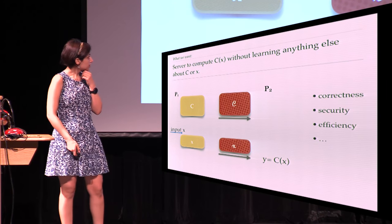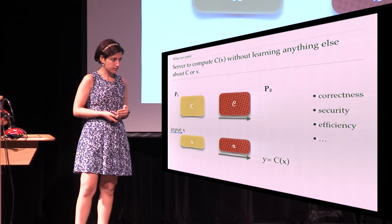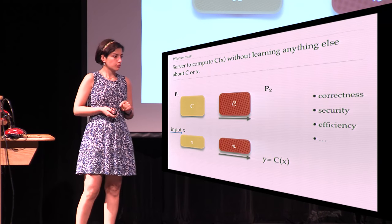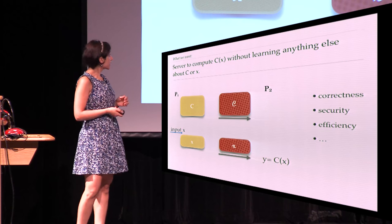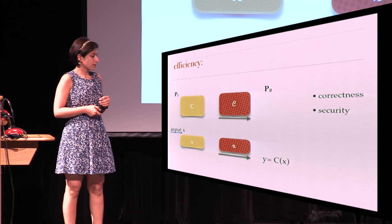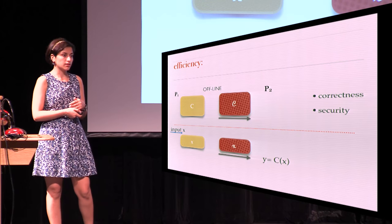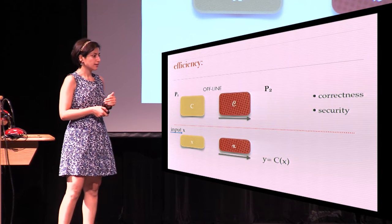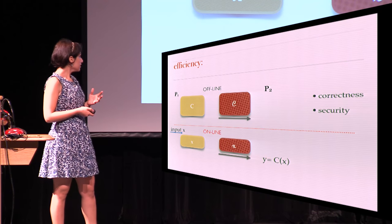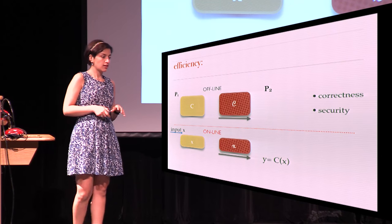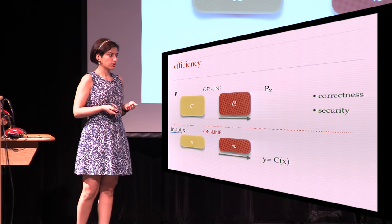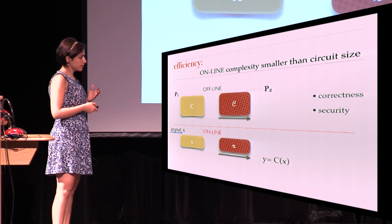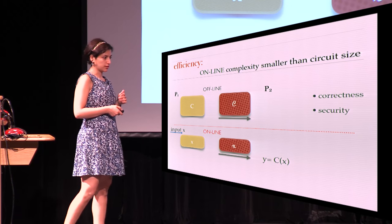Of course, I want correctness, security, and efficiency, and I might even want some other properties from the garbling scheme. When I say efficient, I think about the computation in two phases: the offline phase where we are garbling the circuit — and you can think that you're not in a rush at this point — and then the online phase where you have the input and you want to be able to garble the input quickly. In particular, you don't want to spend as much time as it takes to do the computation yourself. So when we say efficient online complexity, we are talking about something much smaller than the size of the circuit.